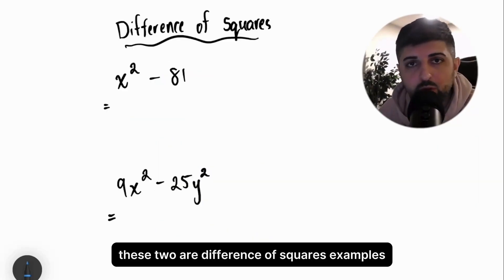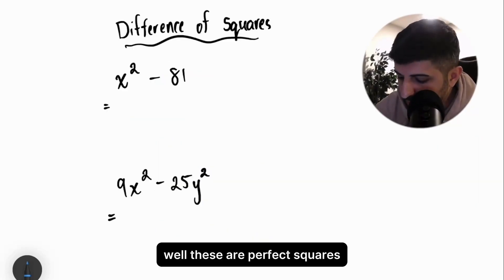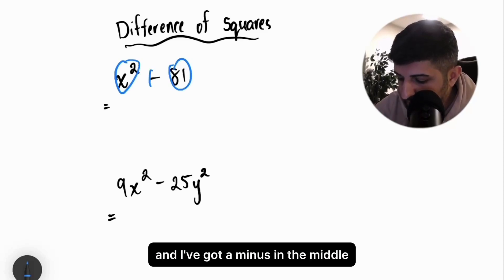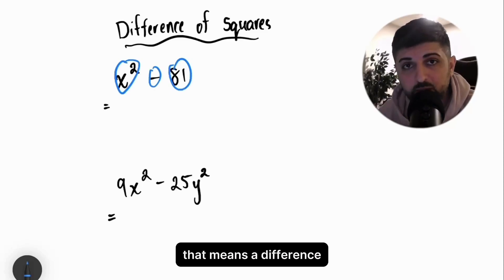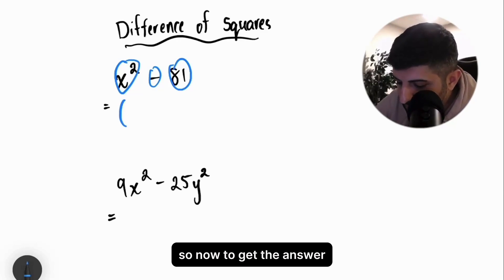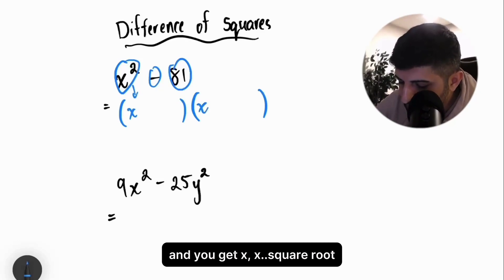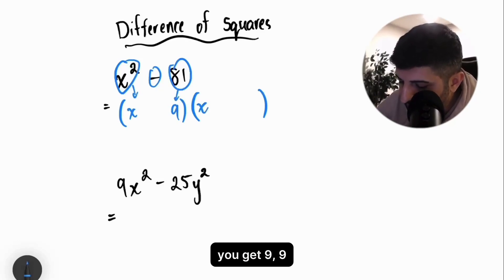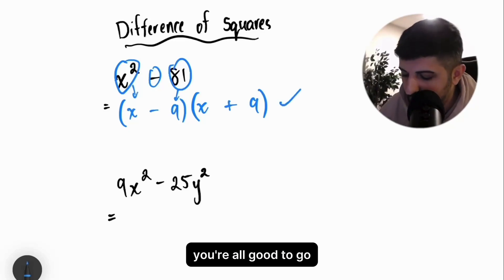These two are difference of squares examples. How do I know that? These are perfect squares and I've got a minus in the middle. That means a difference. Now to get the answer, write two brackets down. Square root the first term and you get x. Square root the last term, you get 9, and then put either minus plus or plus minus. Doesn't matter, you're all good to go.